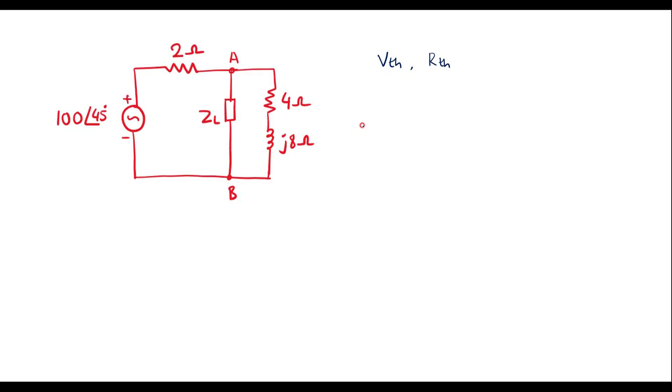Now let me calculate Vth. So to calculate Vth, we're supposed to remove this ZL from the circuit. Now my circuit looks like this. So we have 2 ohm resistor, here we have 4 ohm resistor and we have J8 ohm. This is 4 ohm, 2 ohm and here we have voltage source. Let me assume this is positive, negative and the value of this is 100 angle 45. Let me assume this was A terminal and this is B terminal. I have removed this ZL from the circuit. As A and B is open, no current flows here. So let me assume current I is flowing in the circuit.